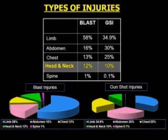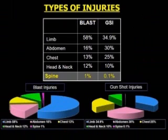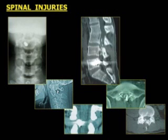These are different types of head and neck injuries. Among the spinal injuries, the majority were due to blasts. These are some of the X-rays and CT scans of spinal injuries showing the spinal cord and nerve injuries.